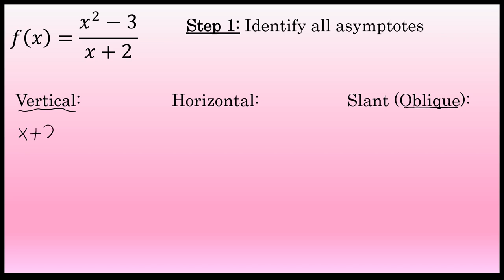To find vertical asymptotes, you set the denominator equal to zero. Here, x plus 2 equals zero means x equals negative 2 is a potential vertical asymptote. Substituting negative 2 into the numerator yields negative 2 squared, 4 minus 3, which is 1, not 0. So x equals negative 2 is a vertical asymptote.